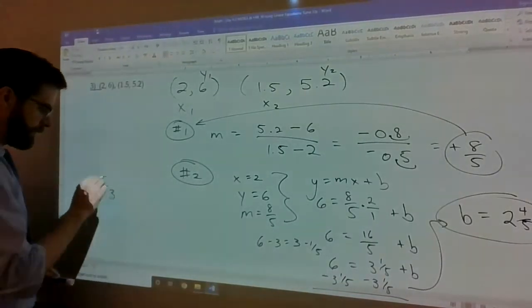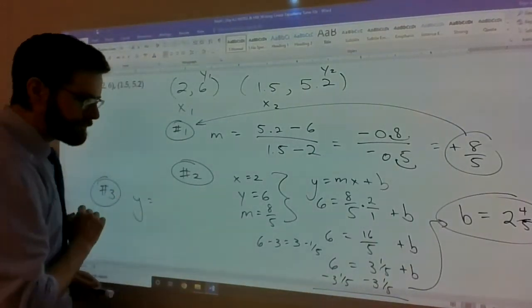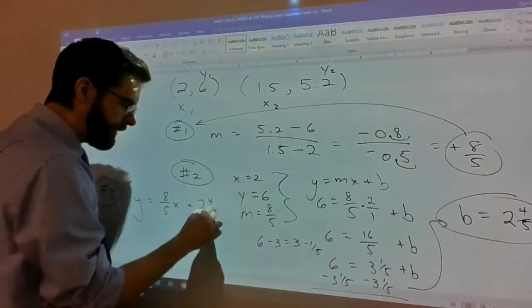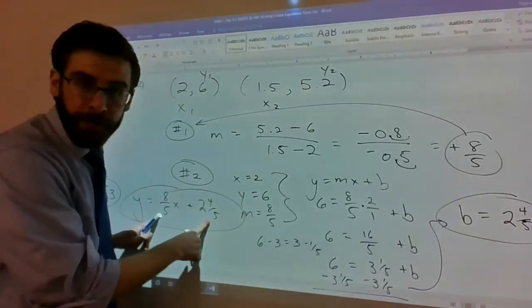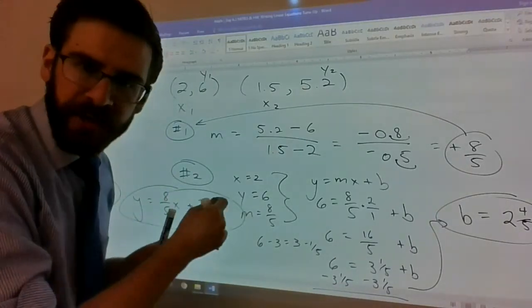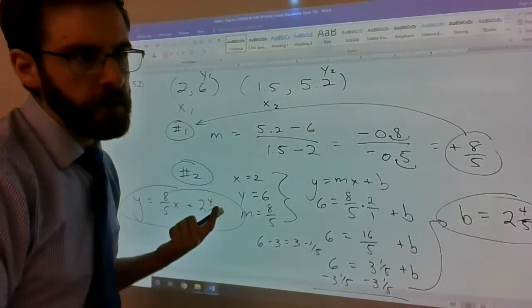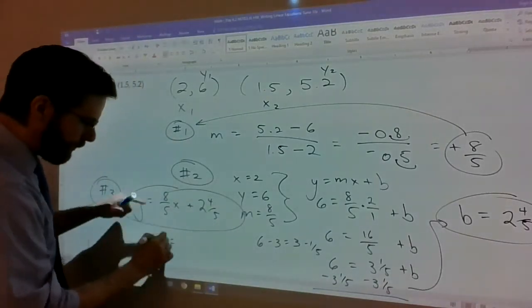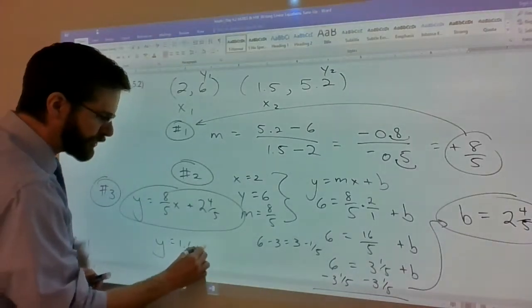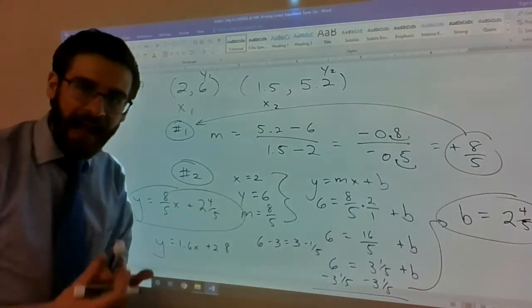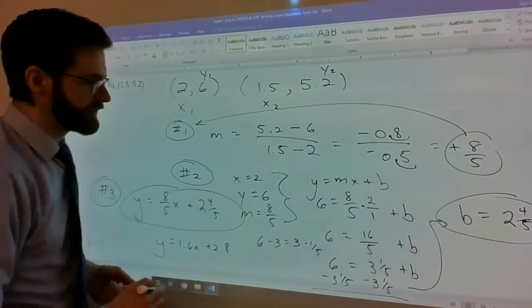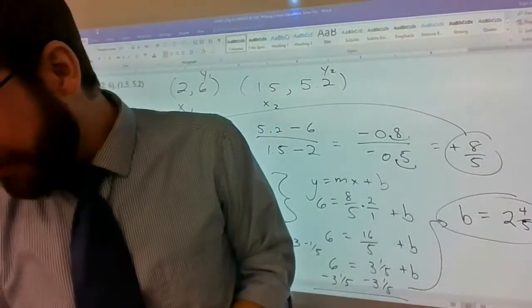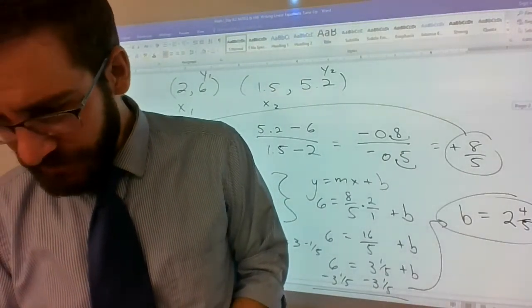Final answer, step 3 is y equals 8 fifths x plus 2 and 4 fifths. By the way, these were what are considered terminating decimals. So you could have technically written this as 1.6x plus 2.8 and it's equally accurate because there was no rounding involved. Alright, last one.